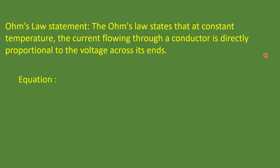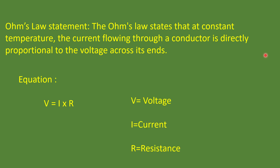Based on that, he derived an equation. The equation is V equals IR, where V is the voltage, I is the current, and R is the resistance. Voltage equals current into resistance. There are three equations based on Ohm's law.